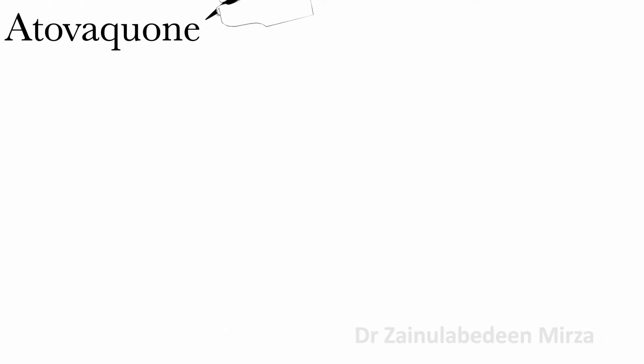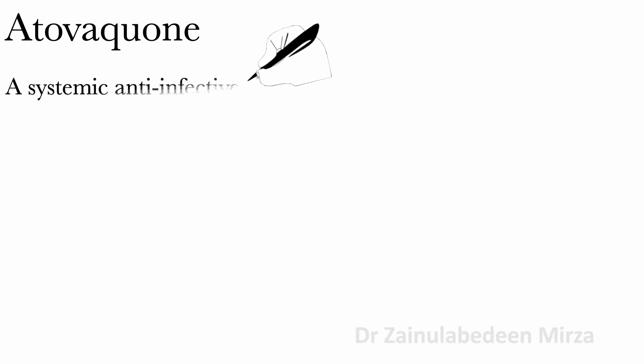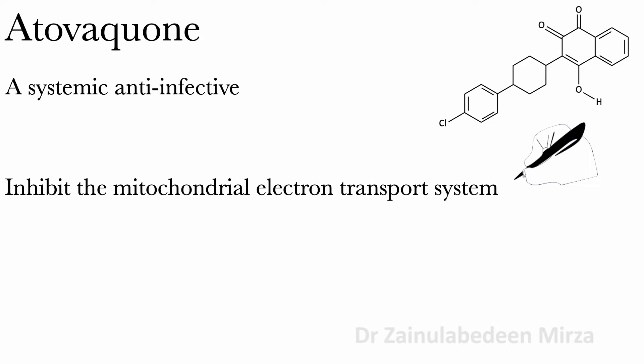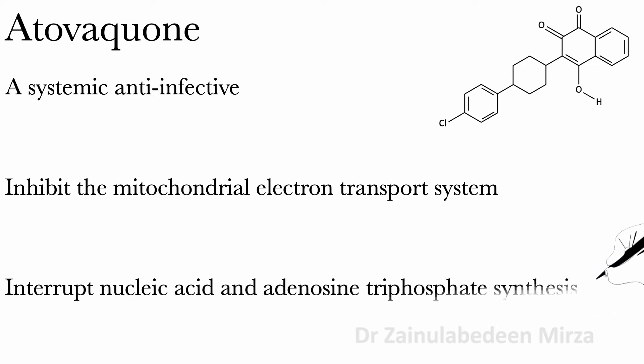Atovaquone is a systemic anti-infective that inhibits the mitochondrial electron transport system at the cytochrome bc1 complex, which interrupts nucleic acid and adenosine triphosphate (ATP) synthesis. Atovaquone has antiprotozoal and antipneumocystic activity.